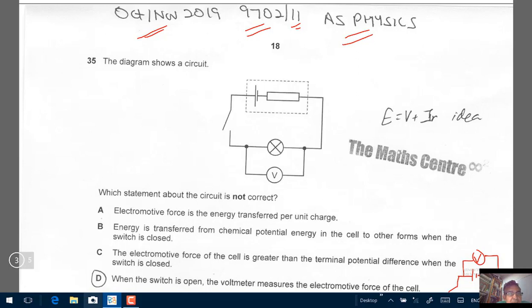Question number 35. The diagram shows a circuit. We are quite familiar with this circuit. We have a cell and we have an internal resistance and then we have a filament bulb and then we have a voltmeter.